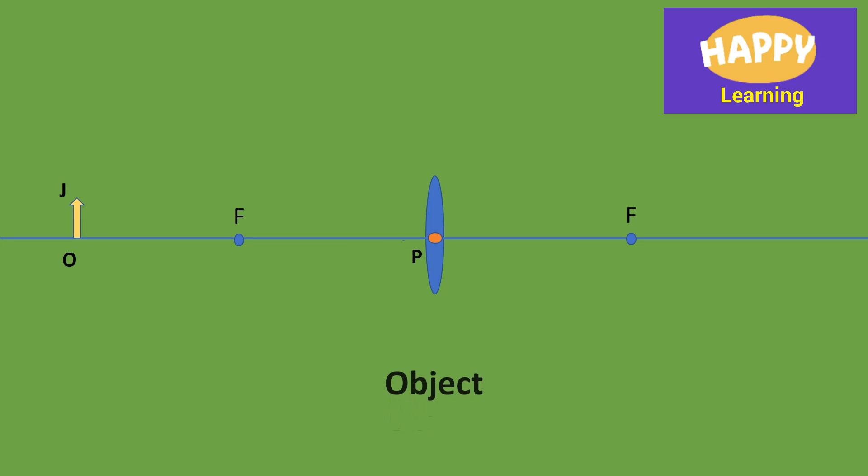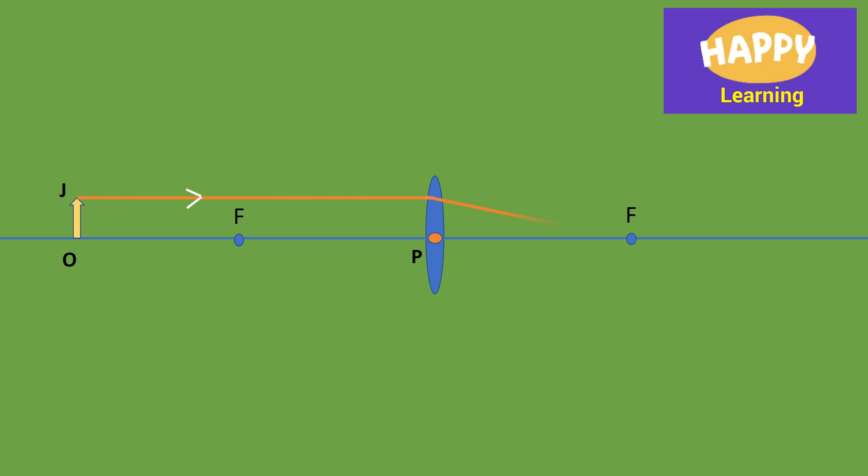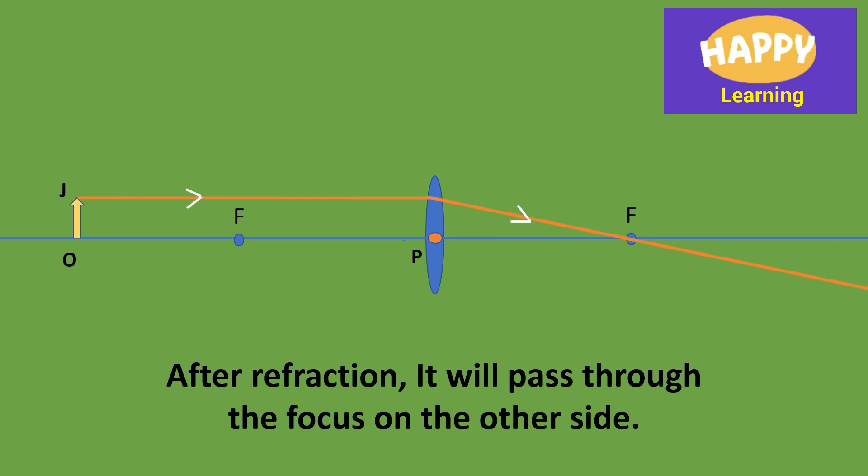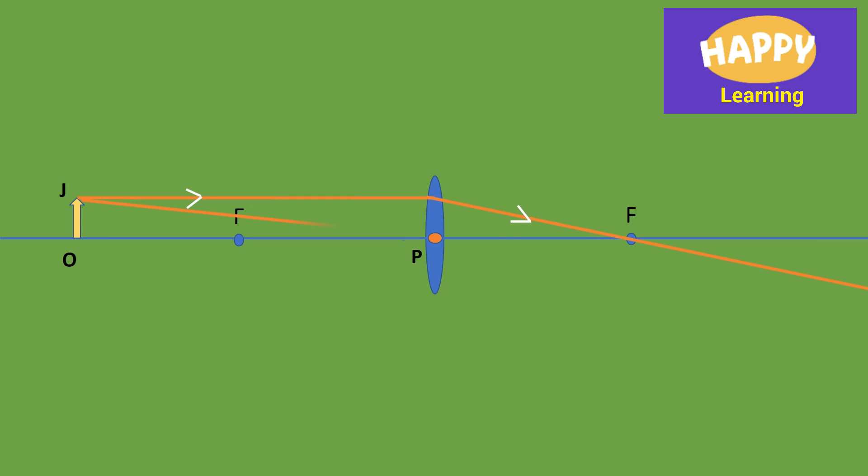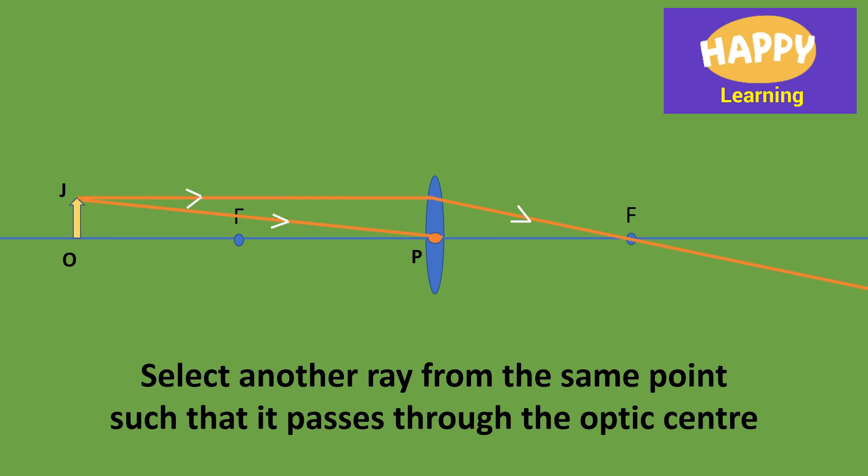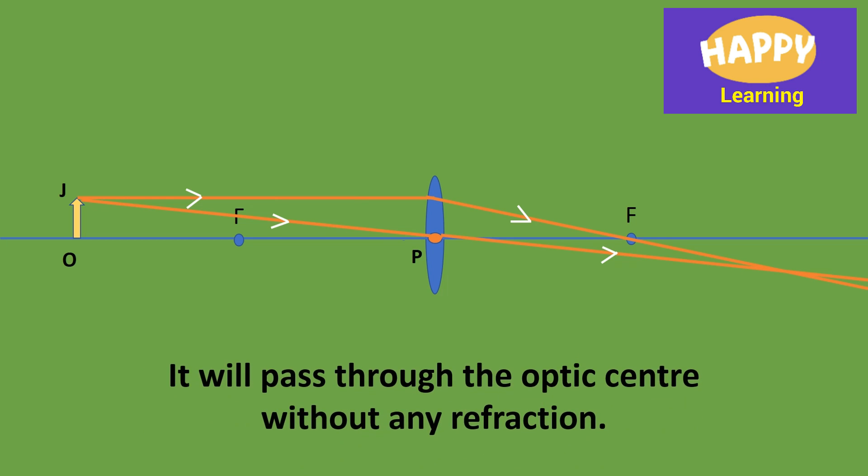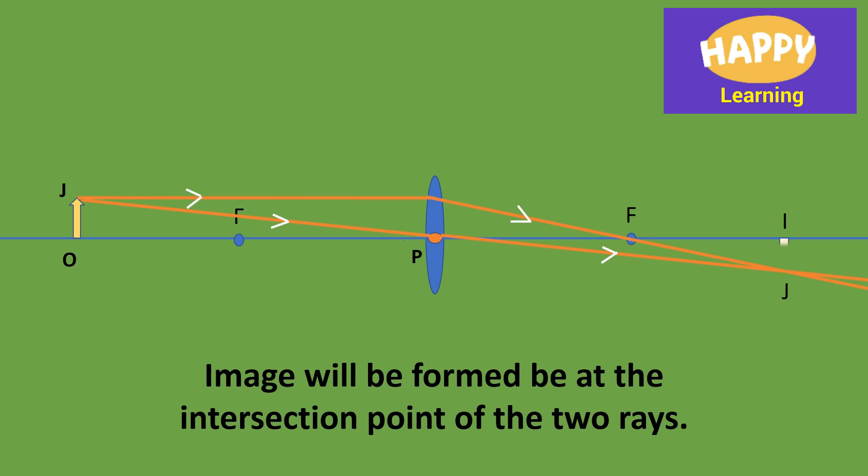Consider an object OJ. Select a ray parallel to the principal axis. This ray will pass through the focus on the other side. Select another ray such that it passes through the Optic Center. As it is passing through Optic Center, it won't be refracted. It passes in a straight line. Image will be formed at the intersection point of these two rays.